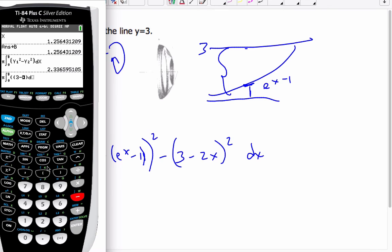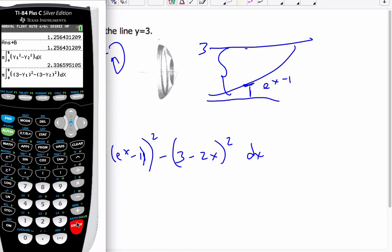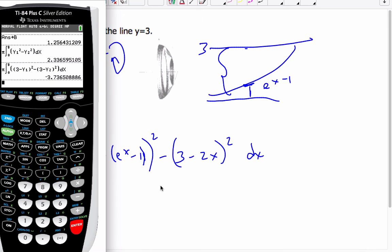3 minus y1 squared. So subtract, parenthesis, 3 minus y2 squared. Dx.